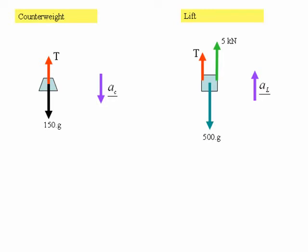Also shown on the screen are the acceleration vectors for both the counterweight and the lift. Because the cable between A and L has a fixed length, the acceleration of L must be equal to minus the acceleration of A — the magnitude is the same, so we'll just call that A from now onwards — and we're going to take the upwards direction as positive.